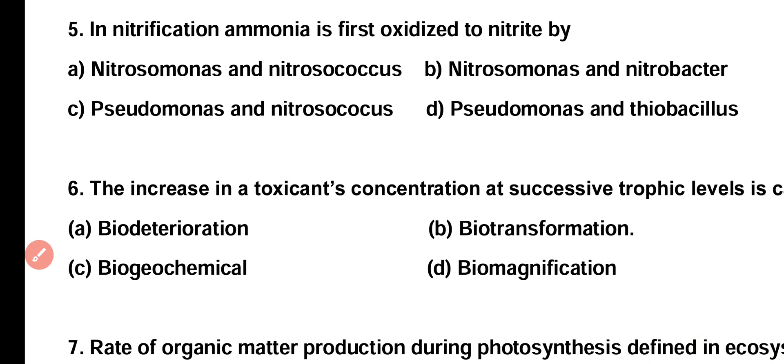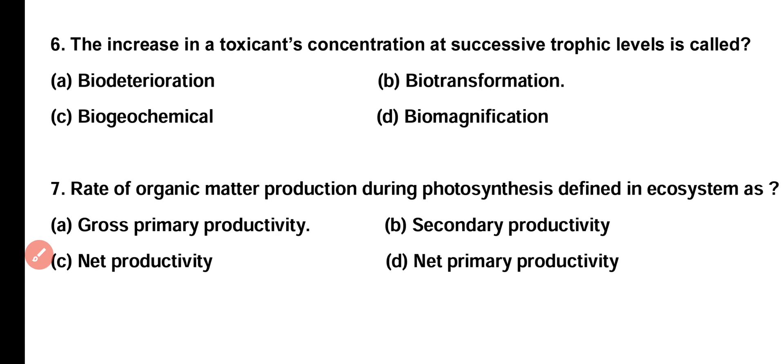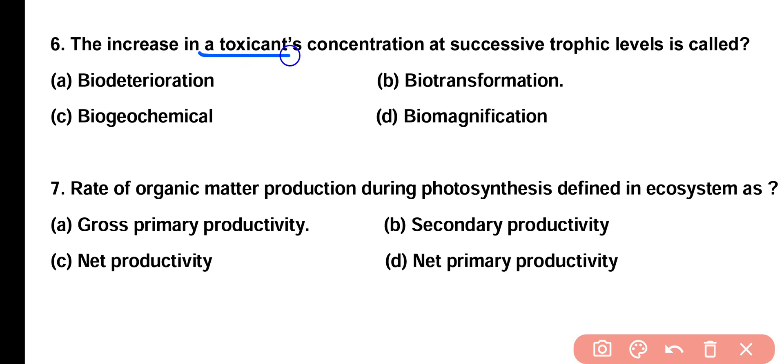Question number six: the increase in toxic concentration at successive trophic levels is called bio-deterioration, bio-transformation, bio-geochemical, or bio-magnification? Correct answer is option D. The increase in toxic concentration at successive trophic levels is called bio-magnification.